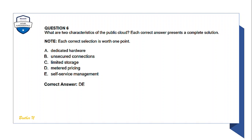Question: What are two characteristics of the public cloud? Each correct answer presents a complete solution worth one point. The correct answers are D and E: metered pricing and self-service management.